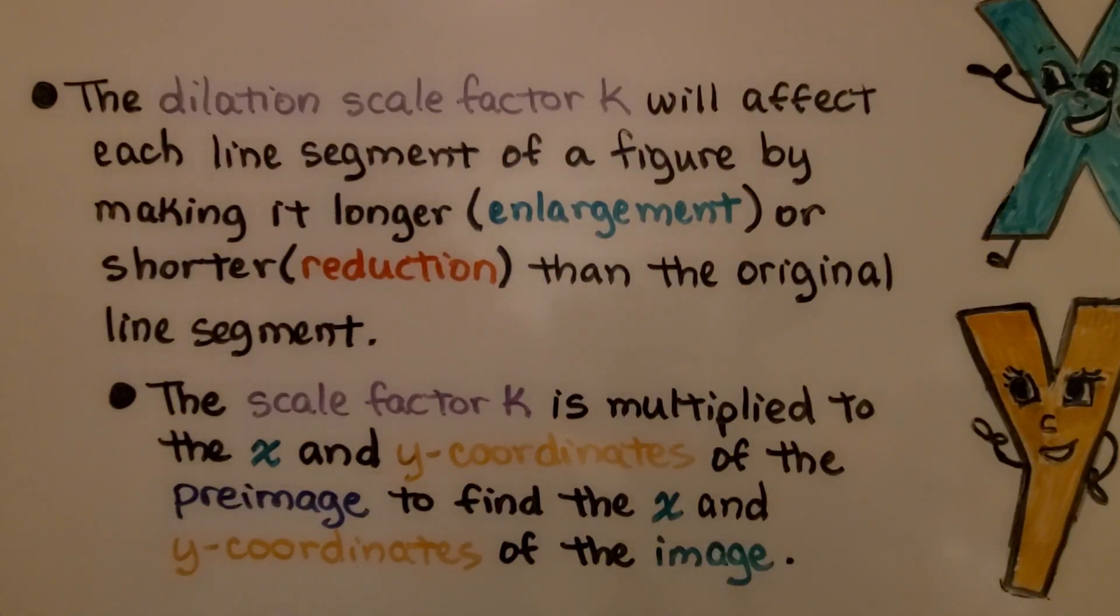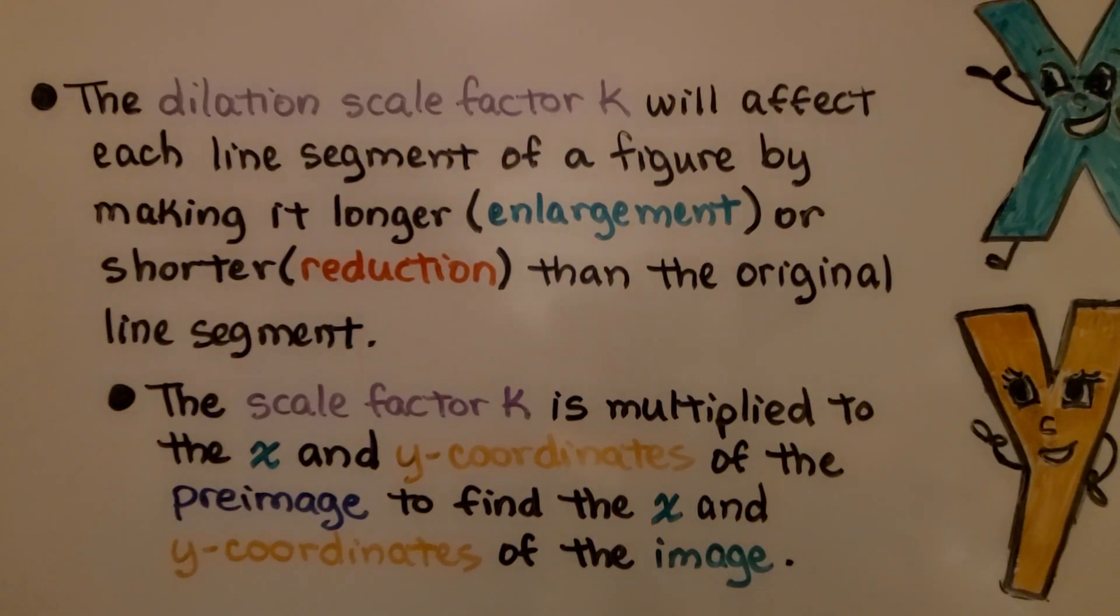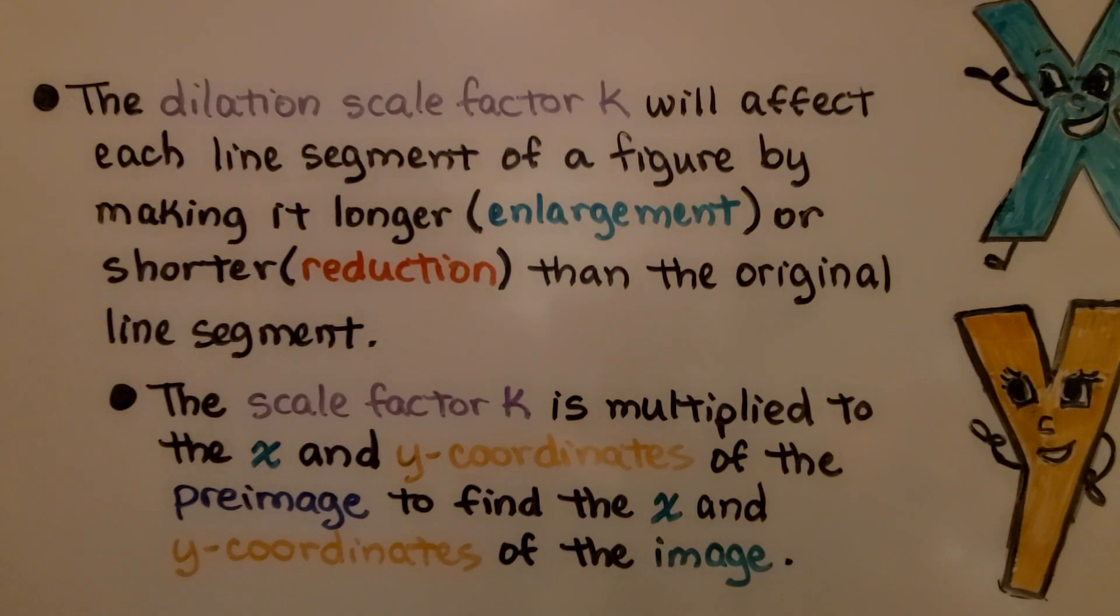The dilation scale factor k will affect each line segment of a figure by making it longer, an enlargement, or shorter, a reduction, than the original line segment. The scale factor k is multiplied to the x and y coordinates of the preimage to find the x and y coordinates of the image.